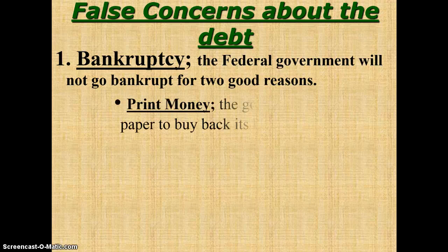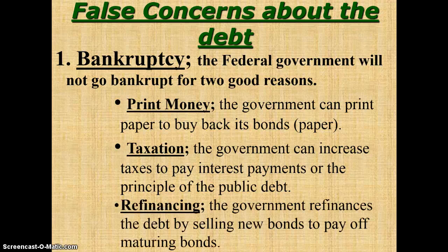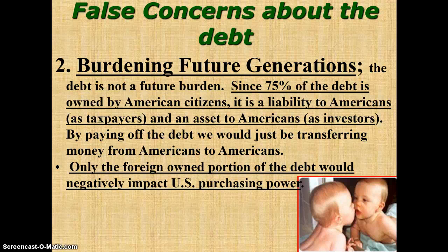Bankruptcy. The federal government will not go bankrupt for two good reasons. First, they can print paper money to buy back its bonds. Second, taxation — the government can increase taxes to pay interest payments or the principal of the public debt. Refinancing: the government refinances the debt by selling new bonds to pay off the maturing bonds. Burdening future generations: the debt is not a future burden. Since 75% of the debt is owned by American citizens, it is a liability to Americans as taxpayers and an asset to Americans as investors. By paying off the debt, we would just be transferring money from Americans to Americans. Only the foreign-owned portion of the debt would negatively impact U.S. purchasing power.